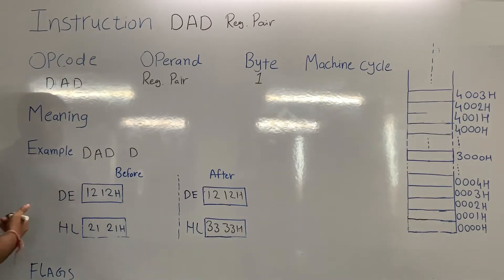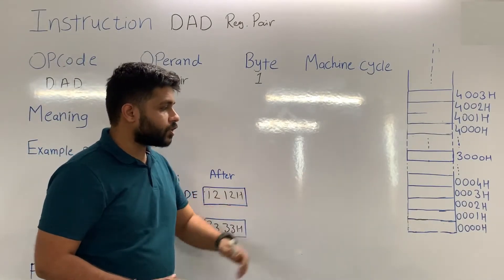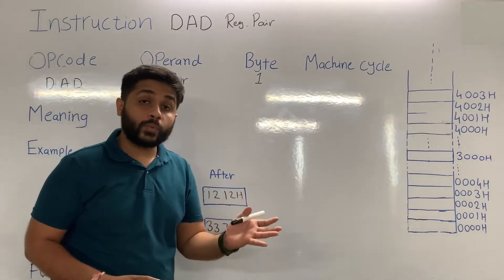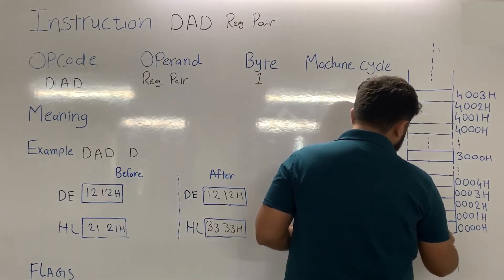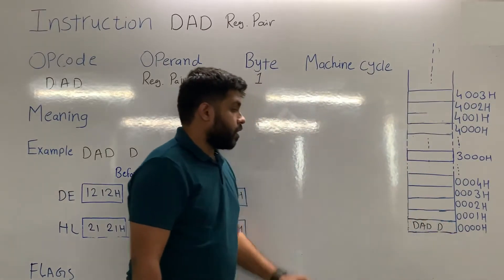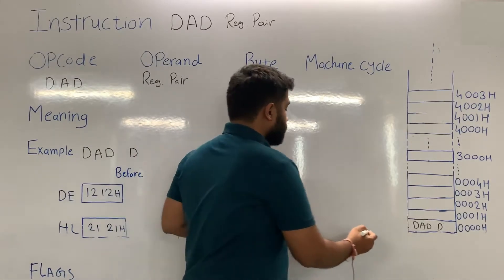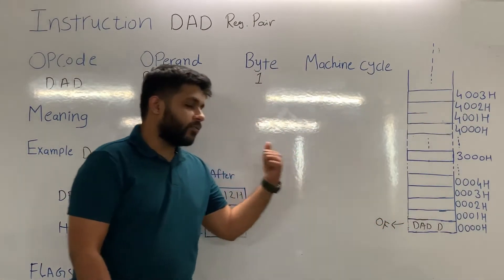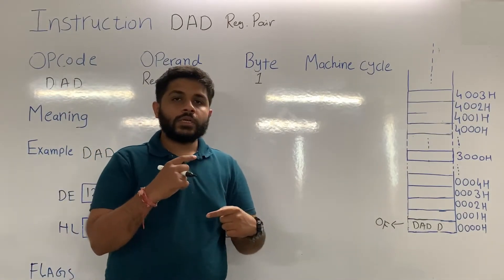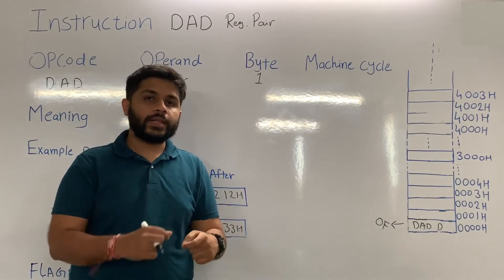Now, let's see the machine cycle. This instruction is 1-byte instruction, so when this instruction is stored in the memory, it will occupy only one memory location. After the instruction is stored, the processor will fetch. To fetch, it will use the machine cycle of opcode fetch. When microprocessor performs the opcode fetch, instruction will be transferred to microprocessor, then processor will decode and it will execute.